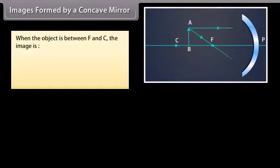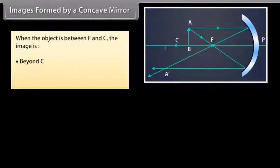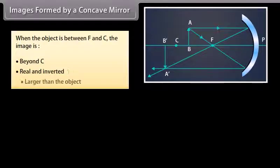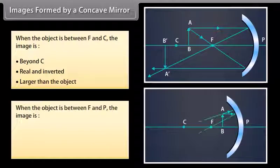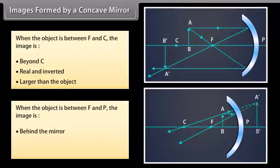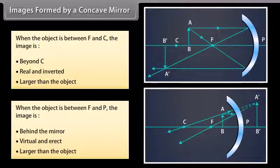When the object is between F and C, the image is beyond C, real and inverted, and larger than the object. When the object is between F and P, the image is behind the mirror, virtual and erect, and larger than the object.